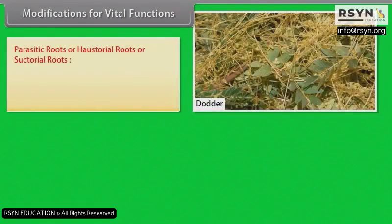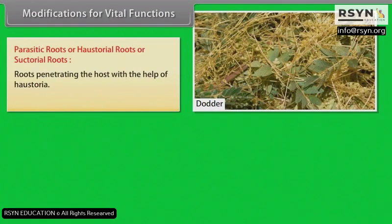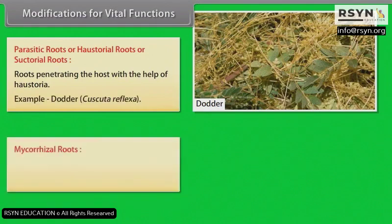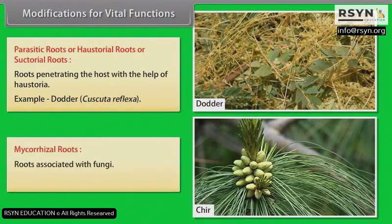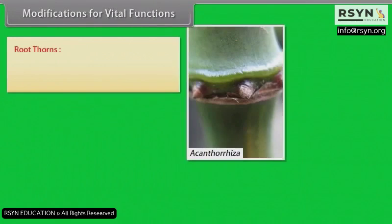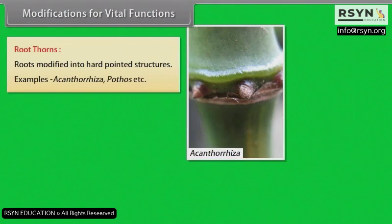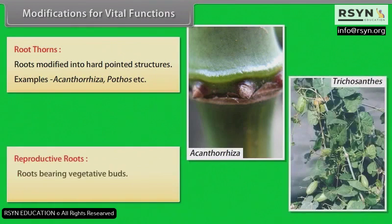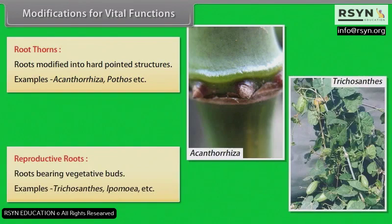Parasitic roots or haustorial roots: Roots penetrating the host with the help of haustoria. Example: dodder (Cuscuta). Mycorrhizal roots: Roots associated with fungi. Examples: chir, birch, etc. Root thorns: Roots modified into hard-pointed structures. Examples: Acanthorrhiza, Pothos, etc. Reproductive roots: Roots bearing vegetative buds. Examples: Trichosanthes, Ipomoea, etc.